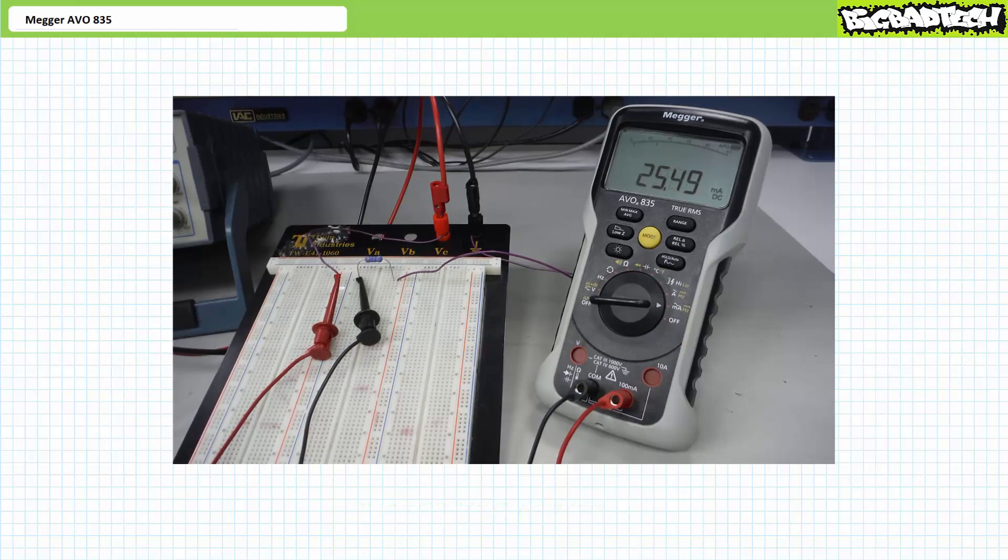The DC ammeter demonstrates this resistor experiences close to 25.5 milliamps, consistent with our earlier expectations.